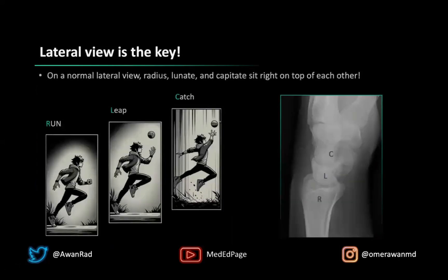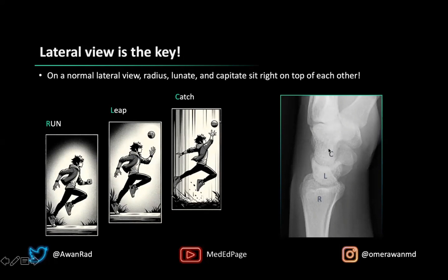Looking at a normal lateral view, the radius, the lunate, and the capitate form a nice straight line — they sit right on top of each other. The lunate is that cup-shaped bone sitting on top of the radius, and the capitate sits right on top of the lunate. A mnemonic for this is 'run, leap, catch' — radius, lunate, capitate. When that alignment doesn't happen, you have some element of carpal malalignment.